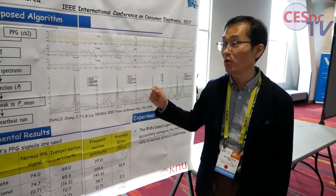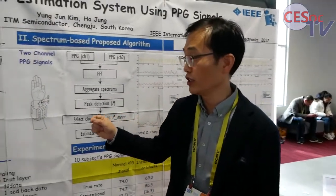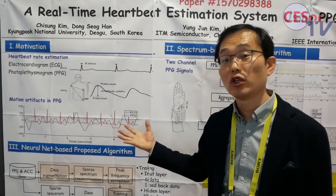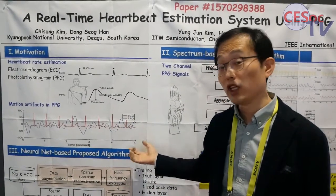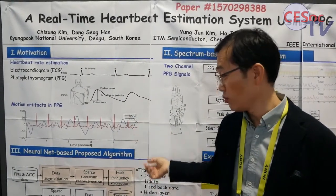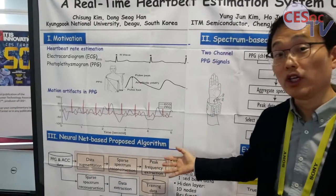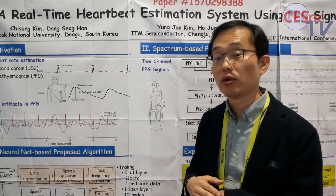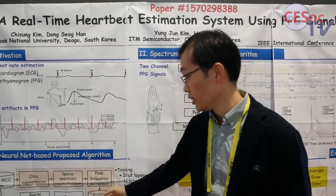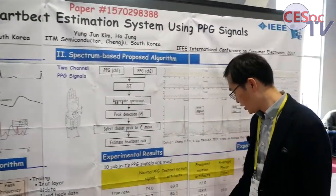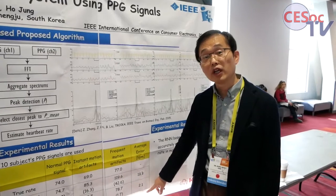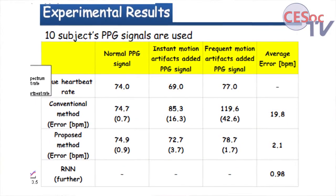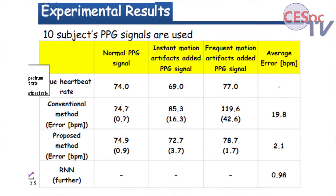We have also proposed another approach called a neural network-based system. If we add neural network-based technology, we can improve the performance significantly. We first do training with a database and then check the heartbeat rate in real time. Finally, the result is only 0.98 — it's really accurate, even while working on a treadmill.